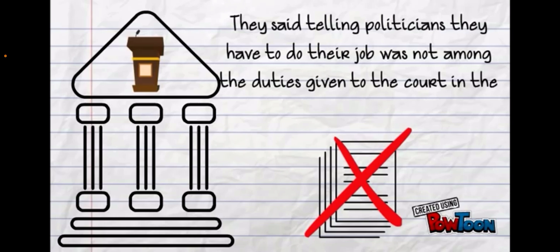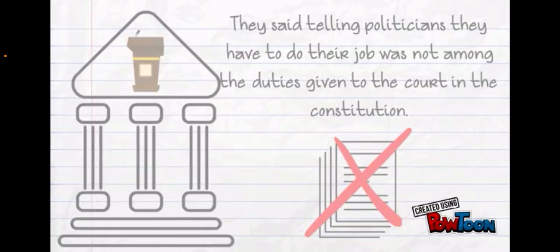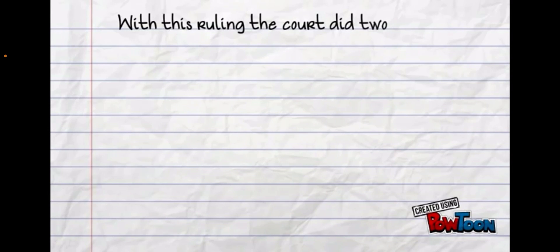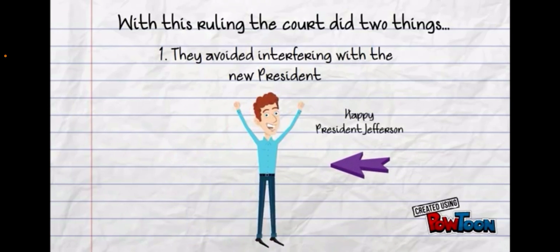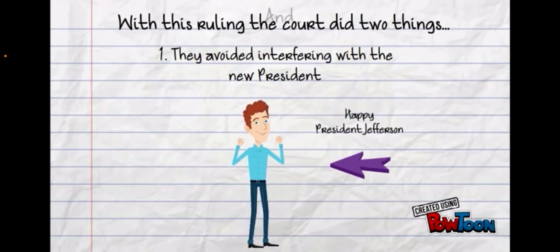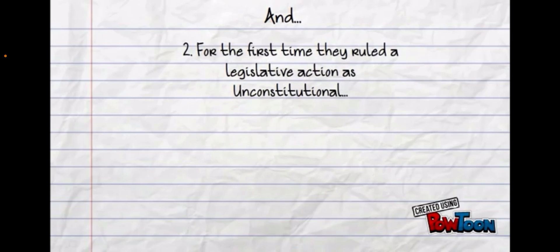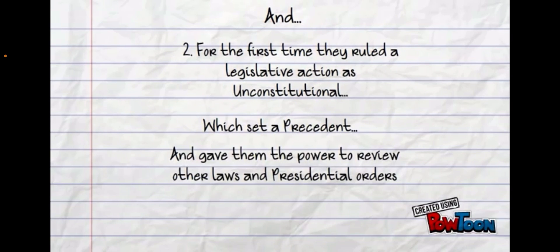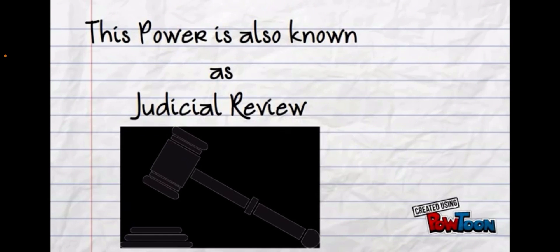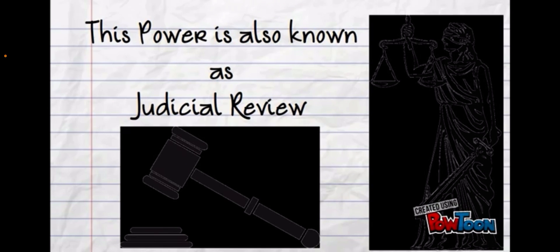With this ruling, the court did two things. They avoided interfering with the new president, so Jefferson was happy. And for the first time, they ruled a legislative action as unconstitutional, which set a precedent. This power is also known as judicial review.